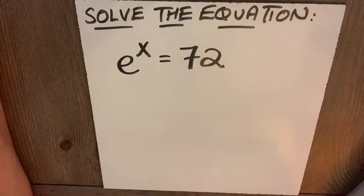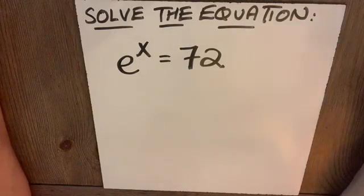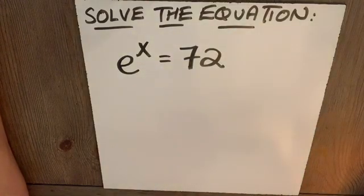Solve the equation e to the x equals 72. First things first. What type of equation is it? We have e to the x. It's an exponential equation.